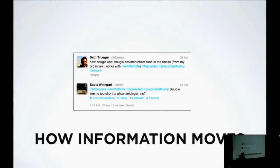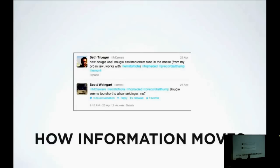Here's an even more recent example — this is all Twitter. Seth Trueger is a friend of mine, chief resident at Mount Sinai. His brother-in-law has a morbidly obese patient with a pneumothorax and has to put in a chest tube. His brother-in-law has this idea to use a bougie and then use a Seldinger technique to put in the chest tube — to make sure that once you pop that hole into the chest wall, it doesn't wrap around just the subcutaneous fat of the very large patient and actually goes into the chest cavity.